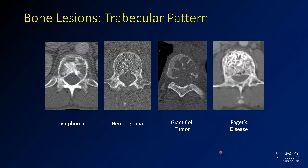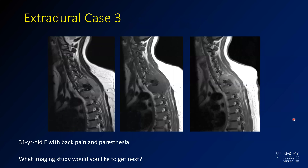On CT, you can think about the trabecular pattern. Hemangiomas tend to have a corduroy or trabecular pattern — little dots of trabeculae centrally. One lesion here has more bone and cortical destruction. A giant cell tumor shows well-defined margins but areas of cortical destruction. Paget's disease shows new bone formation, sclerosis, and cortical thickening. This trabecular pattern can help, although many times you'll have to biopsy these lesions to get a diagnosis.